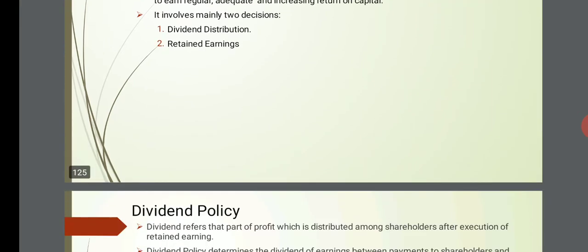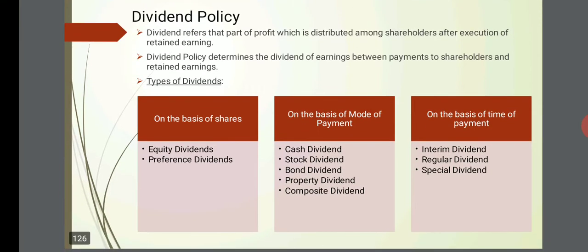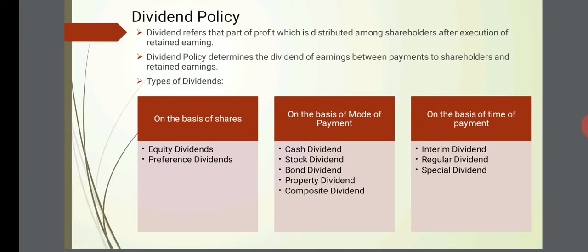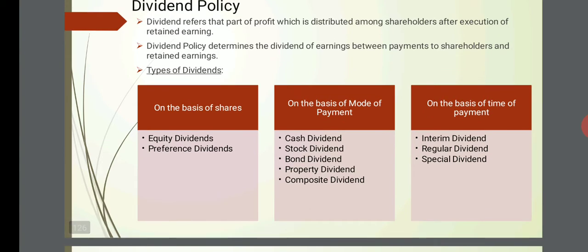Dividend policy: dividend refers to that part of the profit which is distributed among shareholders after the execution of retained earnings. For example, if you earn 100 rupees as profit, you keep 60 rupees for your business and distribute 40 rupees as dividend. Dividend policy determines the division of earnings between payment to shareholders and retained earnings.